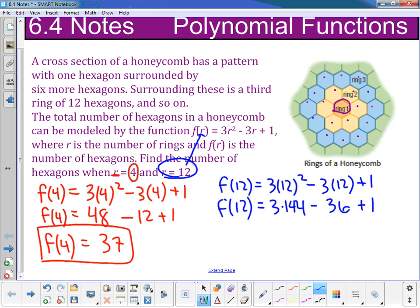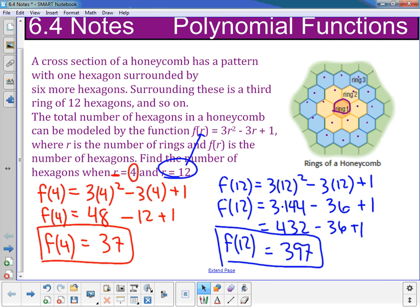So 3 × 144 gives me 432 - 36 + 1, and that I end up with 397. So that way I know that the twelfth ring around the outside of this honeycomb pattern is going to have 397 hexagons. So that's my polynomial function. I'm just taking each one and plugging it in.